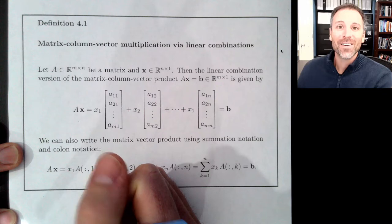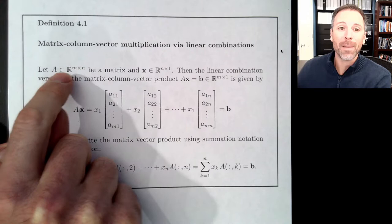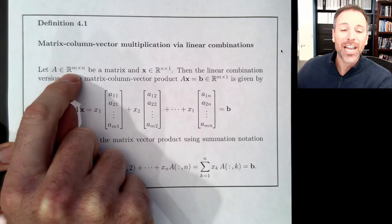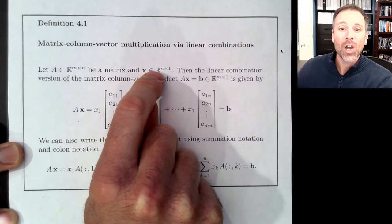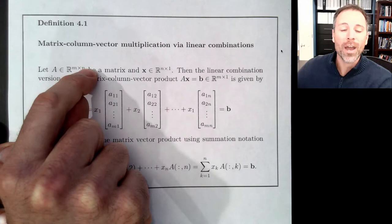We define matrix-column-vector multiplication using linear combinations as follows. We'll start by letting A be an element of ℝ^(m×n), meaning A is a matrix with m rows and n columns, where each entry is a real number. We'll also have a vector x, which is an element of ℝ^(n×1), meaning x is a column vector with n entries. Notice that the variable n matches the number of columns of A.